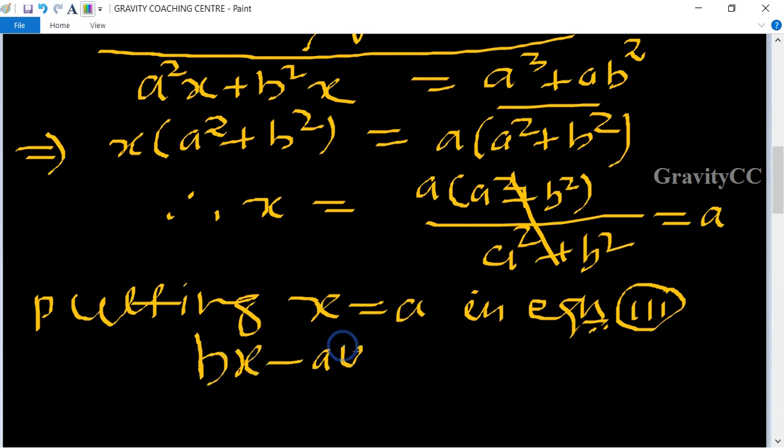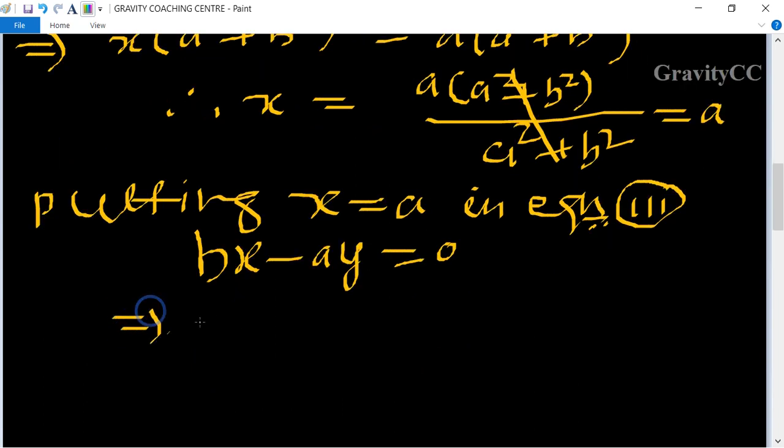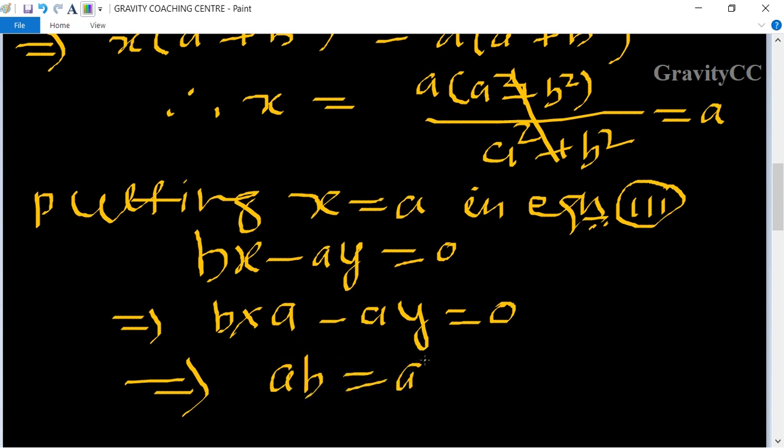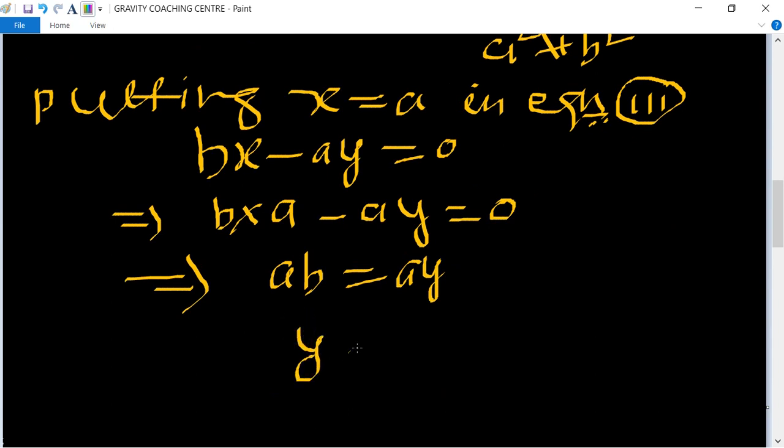Substituting: b into a minus ay = 0, so ab = ay, and y = ab/a. The a cancels, so y = b.